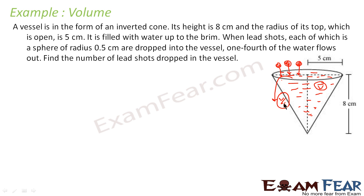The volume that came out is V/4. Since the height and radius of the cone are known, we can find volume V, and therefore V/4. We know that V/4 is equal to the total volume of the lead shots. The total volume of the lead shots is n times the volume of one lead shot, which equals V/4.